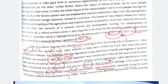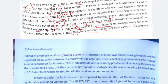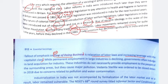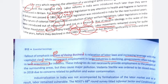Trade unionism has declined significantly in India. One fallout of the emphasis on ease of doing business is relaxation of labor laws and increasing leverage with the capitalist class. India is promoting ease of doing business by reducing labor law restrictions, tariffs, and quotas — so trade unionism has been declining. Permanent employment in large industries is also declining. Governments often indulge in land acquisition for setting up industries.